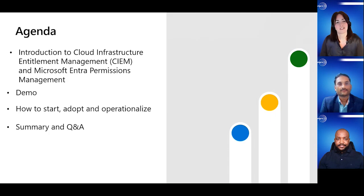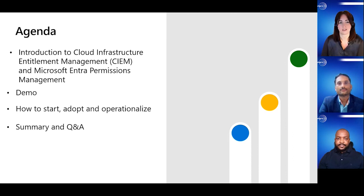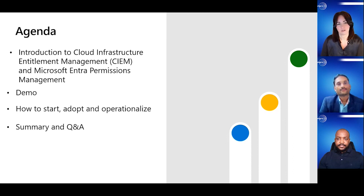So the agenda for today's session is broken down into four parts. We're going to do an introduction as to what Cloud Infrastructure Entitlement Management, or CIEM, is and Microsoft Entra Permissions Management. Samba is going to show you a demo, then Prakash is going to talk about how to get started, how to adopt, and how to operationalize. Then I'll run through a quick summary and we'll get into the Q&A.